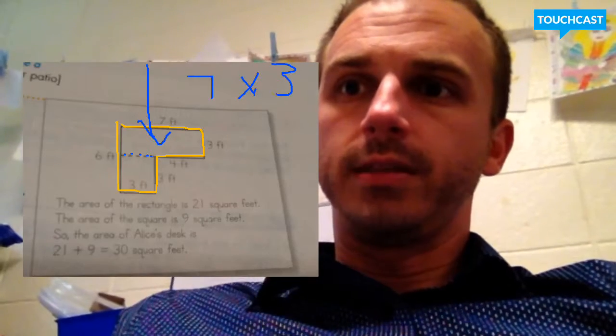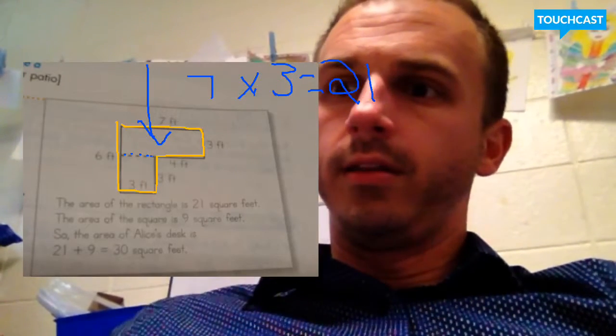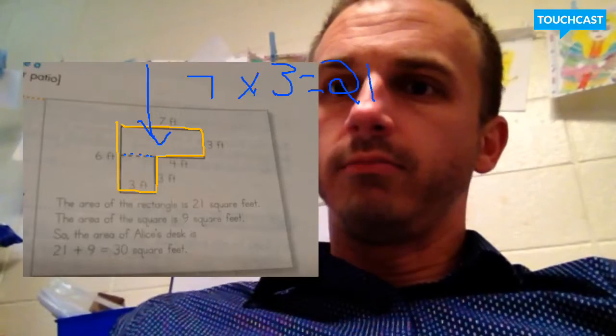If we did length times width, 7 times 3, the area would be 21 square feet, right? 21 square feet.